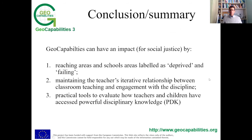Thank you very much, Martin. I'd like to conclude and summarize what has gone before. The project sets out to explore really whether geo capabilities has a social justice dimension, and in what ways it has a social justice dimension. I think we have evidence to show that it does, in both conceptual or theoretical and some practical ways. Three ways it can have an impact for social justice are: first, reaching areas and schools and children and teachers working with those children and young people in areas labeled as deprived and failing.